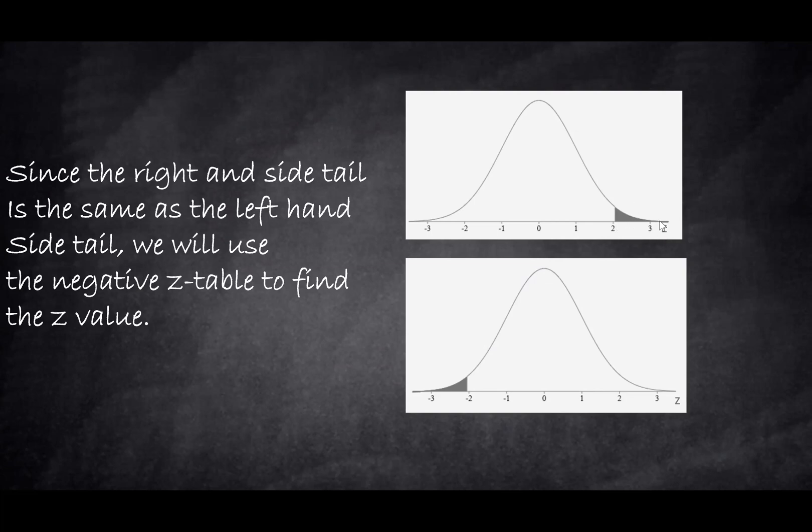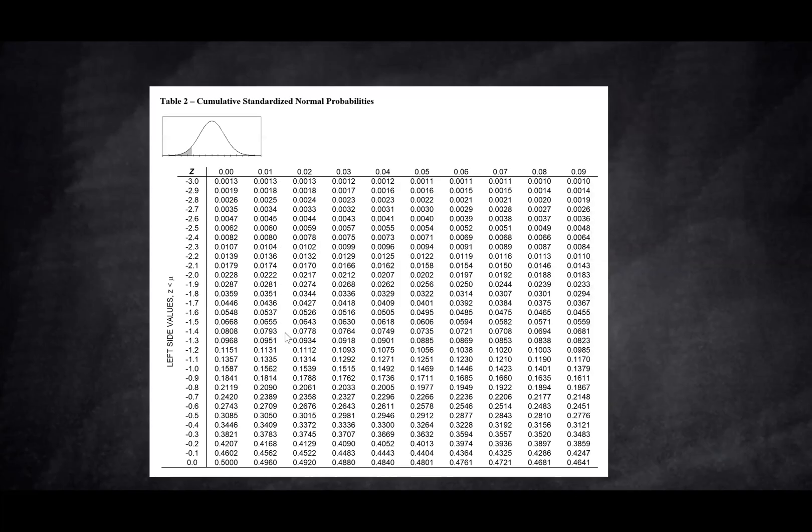So what we do is use the symmetry and we use the left-hand side tail, which these two are exactly the same tail. Both of them are 2%. In this case, because we're using the left-hand side tail, we'll use the negative number table to find the 2% inside. Here is the table and we're looking for 2%. If you look carefully, you don't have exactly 2%. You have 0.0197 and 0.0202. The closest value to 2% is 0.0202 and we'll use that value.